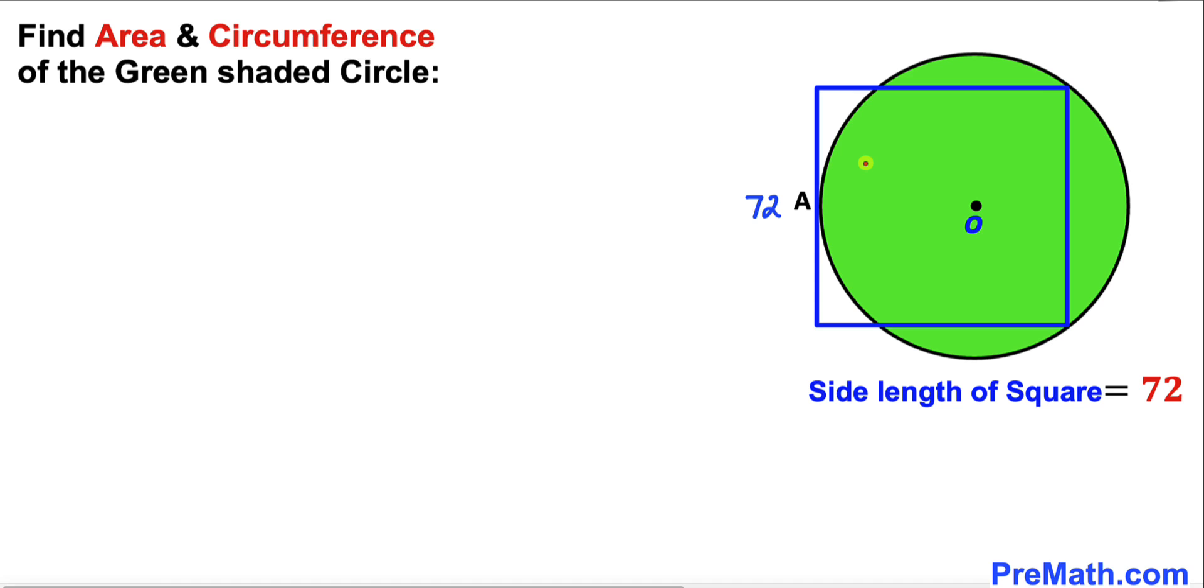The side length of this square is 72 units. In other words all these sides are going to be 72 units as well, and now we are going to calculate the area and the circumference of this green shaded circle.